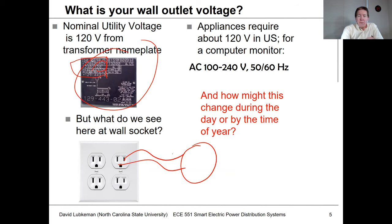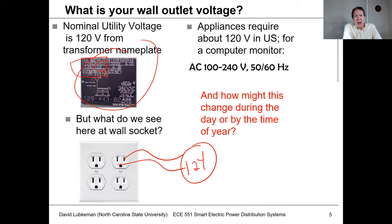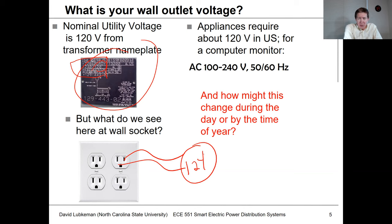I took a measurement while recording and saw a voltage of 124 volts, which is probably a little bit on the high side, but not atypical. A lot of times if you were going to go to different residential sites, you'd probably see voltages more around 122 volts. Utilities tend to keep it a little bit higher to account for drop you might have under high loading conditions.